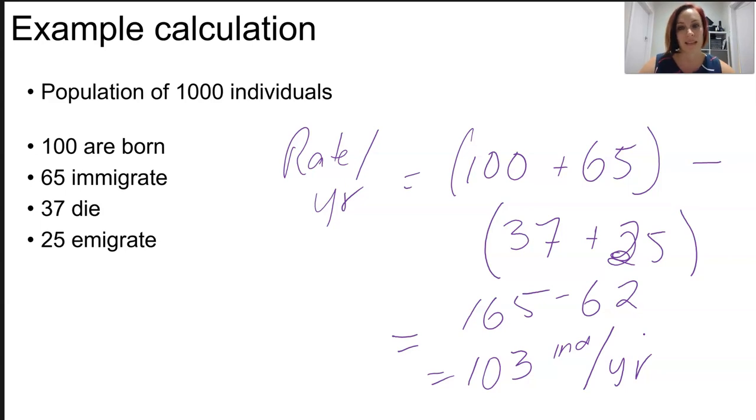A negative growth rate indicates a declining population. This can also be expressed in numbers per unit time, like per year, or as a percentage increase. We could then find out that 103 over a thousand individuals, we can find our percentage from that.